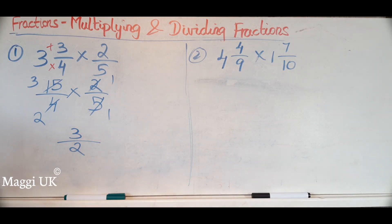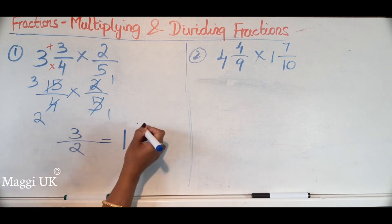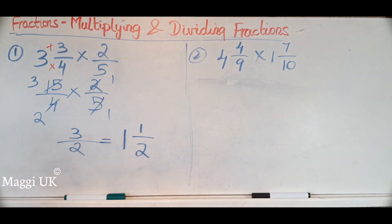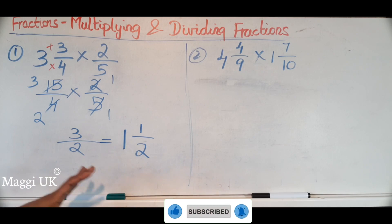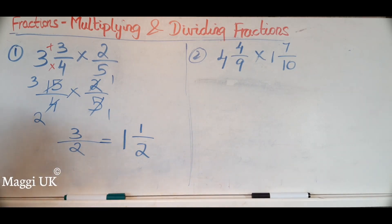To bring 3 over 2 to simplest form — that's a mixed number. How many times does 2 go into 3? Once, with remainder 1. So the answer is 1 and 1 over 2. In an exam, you should always bring the answer to its simplest form, which means converting back to a mixed number. Even if they don't ask, doing so won't be wrong.